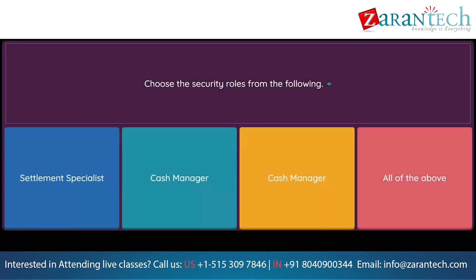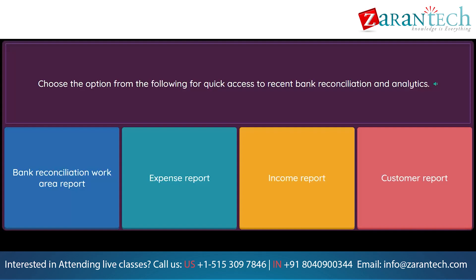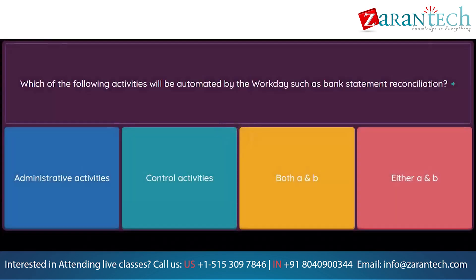Question: Choose the security roles from the following. Option 1: settlement specialist. Option 2: cash manager. Option 3: cash manager. Option 4: all of the above. Question: Choose the option from the following for quick access to recent bank reconciliation and analytics. Option 1: bank reconciliation work area report. Option 2: expense report. Option 3: income report. Option 4: customer report. Question: Which of the following activities will be automated by Workday, such as bank statement reconciliation? Option 1: administrative activities. Option 2: control activities. Option 3: both A and B. Option 4: either A and B.